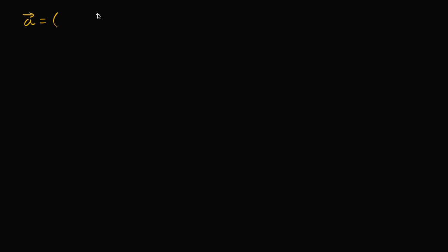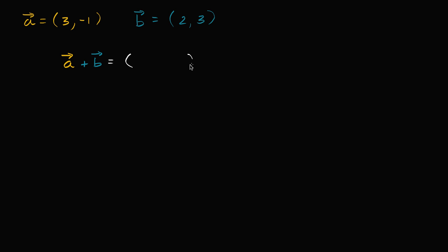Let's get some practice, and hopefully a little bit of intuition, for adding and subtracting two-dimensional vectors. Let's say that I have vector a, and its x component is three and its y component is negative one. And let's say we also have a vector b, and its x component is two and its y component is three. Now let's first think about what a plus b would equal — what resulting vector would this be? I encourage you to pause the video and think about it.